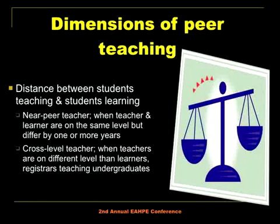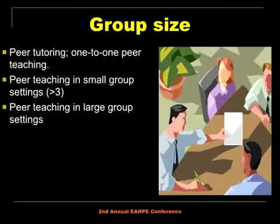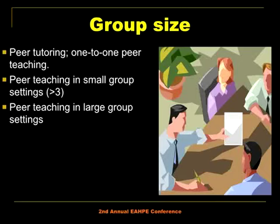What are the dimensions of peer learning? If you are a teacher it is good to know how to arrange this. First is distance — the level between the teacher and the learner. Near peer teachers are on the same level but differ by one or more years, like a graduate student teaching undergraduates. Cross-level teachers are on a different level than learners. Then there is group size: one-to-one peer teaching, peer teaching in small groups of three, or peer teaching in large groups.